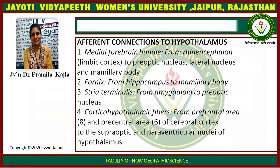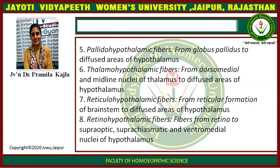Afferent connections to the hypothalamus include: the medial forebrain bundle from the rhinen-cephalon and limbic cortex to the pre-optic nucleus, lateral nucleus, and mammillary body; fornix fibers from the hippocampus to the mammillary body; stria terminalis from the amygdala to the pre-optic nucleus; and cortico-hypothalamic fibers from pre-frontal area 8 and pre-central area 6 of the cerebral cortex to the supra-optic and paraventricular nuclei. Palleo-hypothalamic fibers run from the globus pallidus to the diffuse area of the hypothalamus.